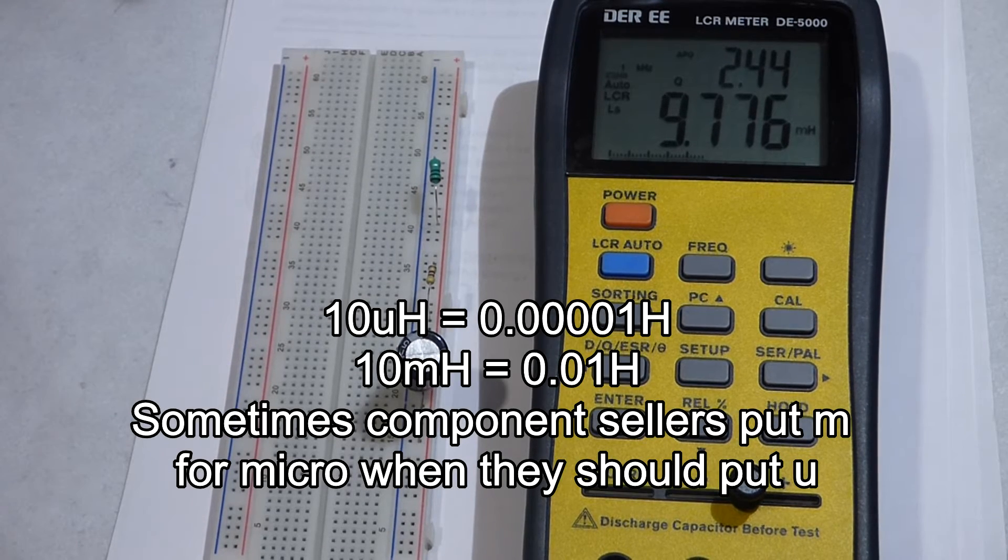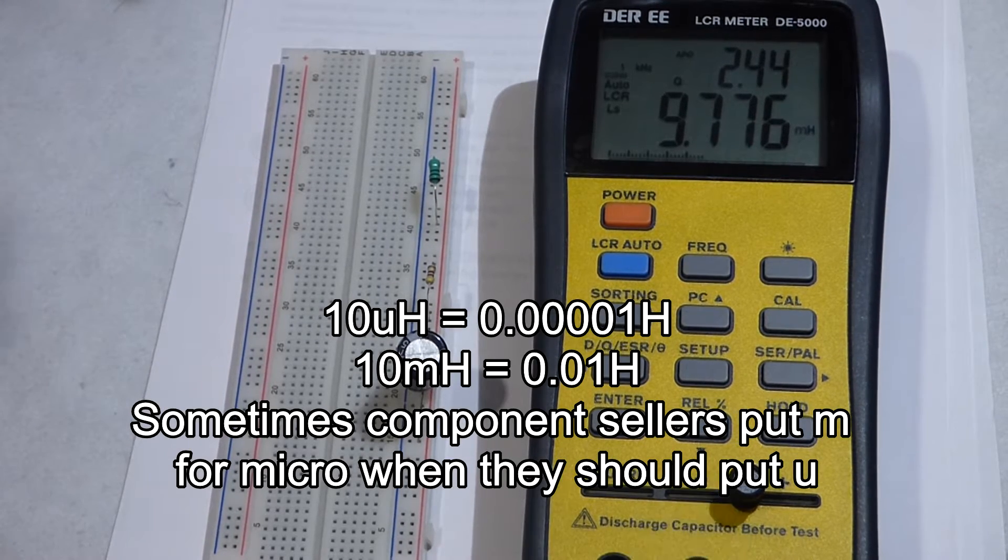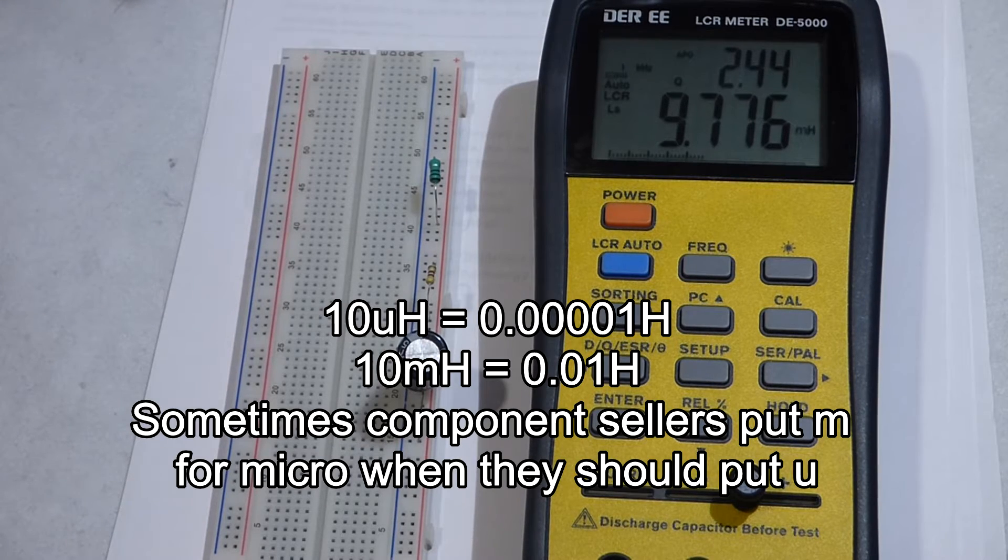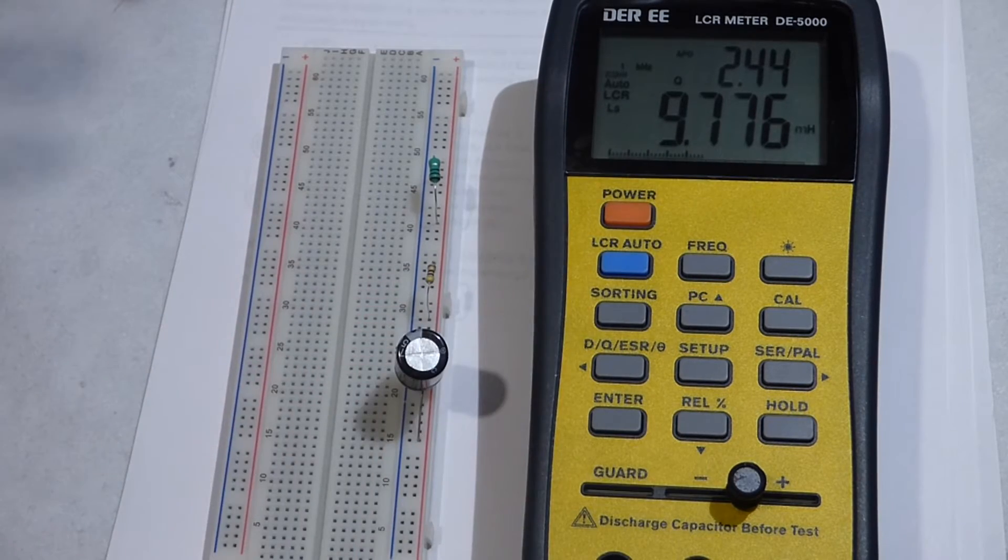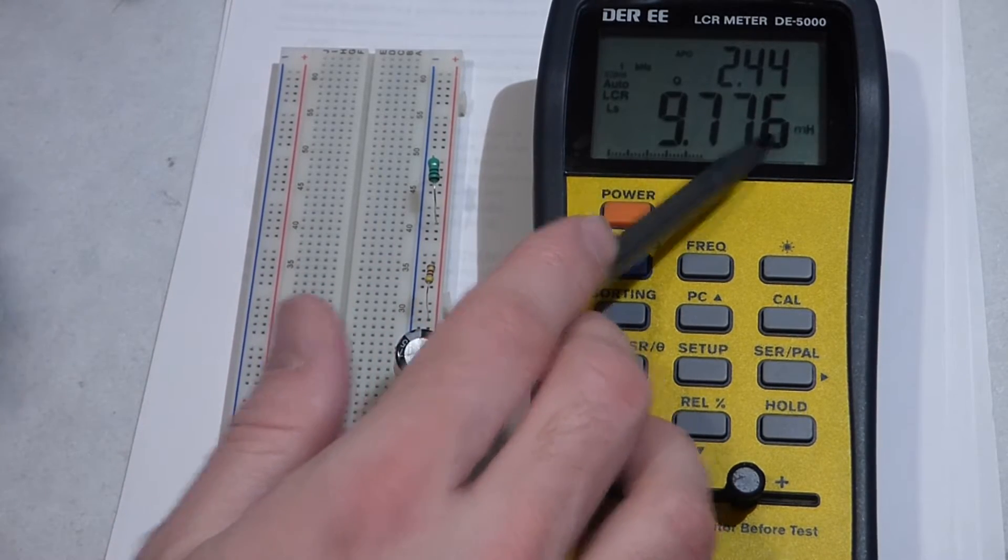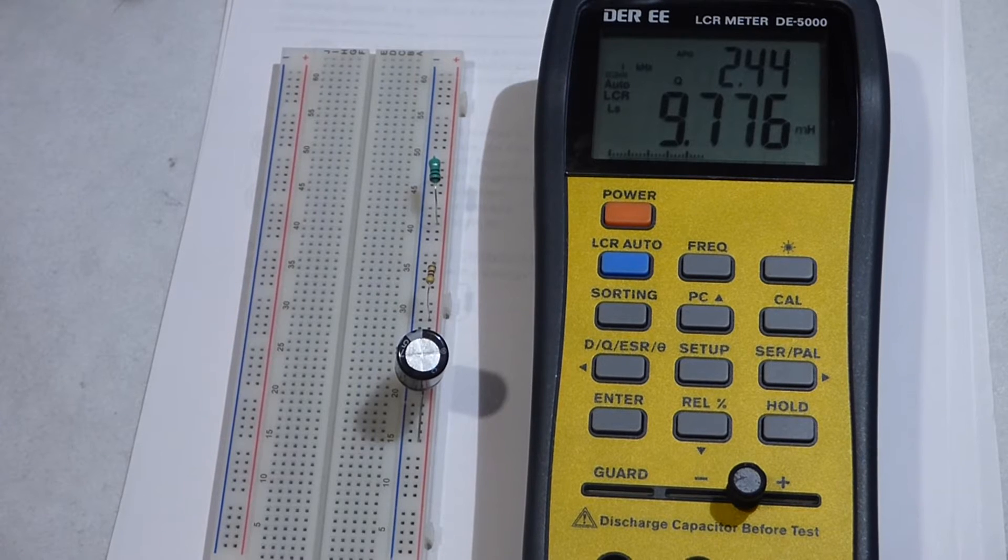A lot of times people use 'u', but when people are selling components in the micro range, they often put 'm' for micro, even though 'm' should be milli. Milli is 1,000 times as large as micro.